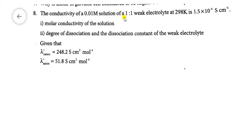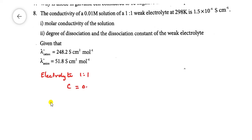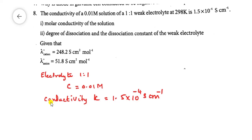Question number 8: The conductivity of a 0.01 M solution of a 1:1 weak electrolyte at 298 K is 1.5 × 10⁻⁴ S cm⁻¹. Find the molar conductivity of the solution, the degree of dissociation, and the dissociation constant of the weak electrolyte. The given electrolyte is of type 1:1, concentration C = 0.01 M, and conductivity κ = 1.5 × 10⁻⁴ S cm⁻¹.